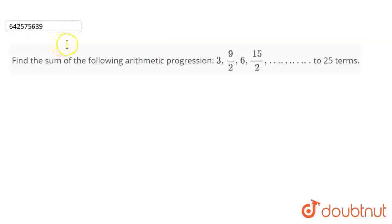Here the AP which is 3, 9/2, 6, 15/2 and so on is given and we have to find the sum to 25 terms. The first term is 3 and the common difference is given by the difference between any two consecutive terms.